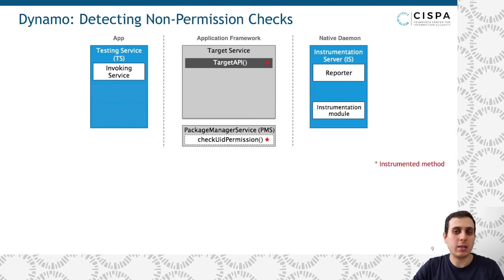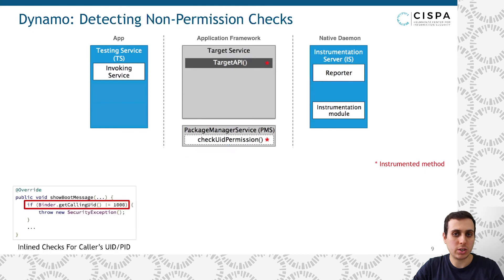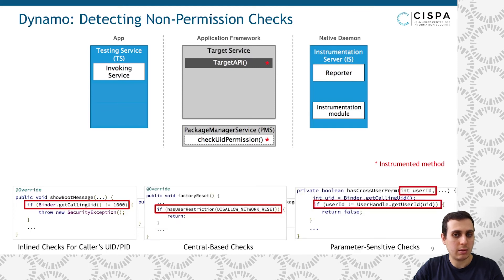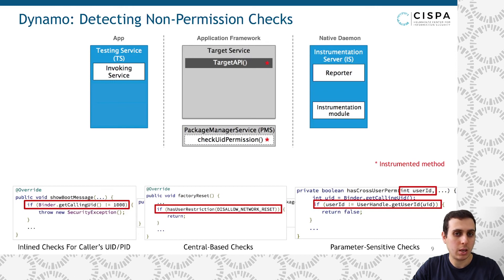We apply different techniques to detect each type of security check, which can be classified into three categories. The first is the inline checks on the Linux user ID and GID of the calling process. The second category is the centrally managed checks like app ops or user restrictions. The final category contains the security checks that are dependent on the API's parameters. We cannot cover those techniques here for time constraints, so we refer you to read our paper for more information about the design and implementation of Dynamo.